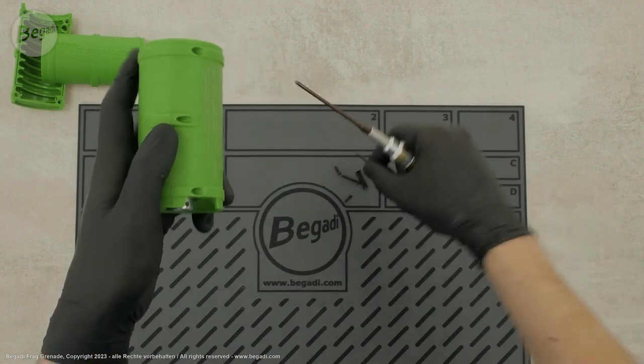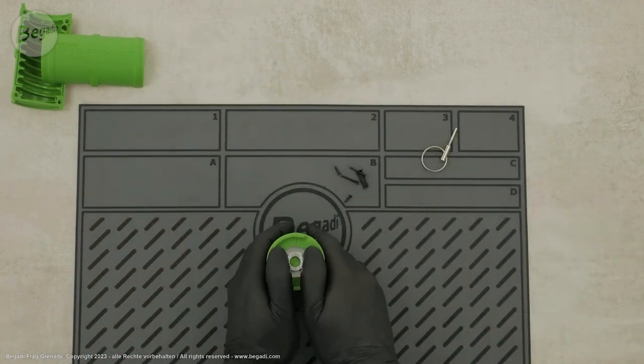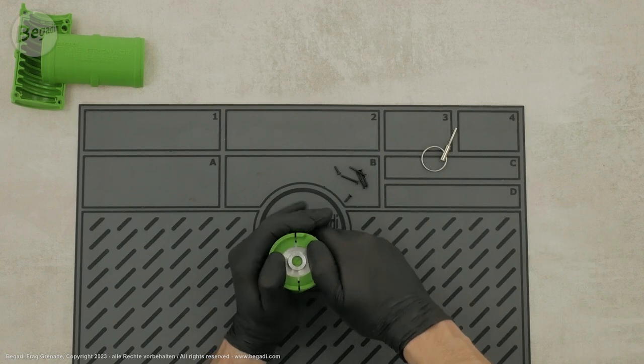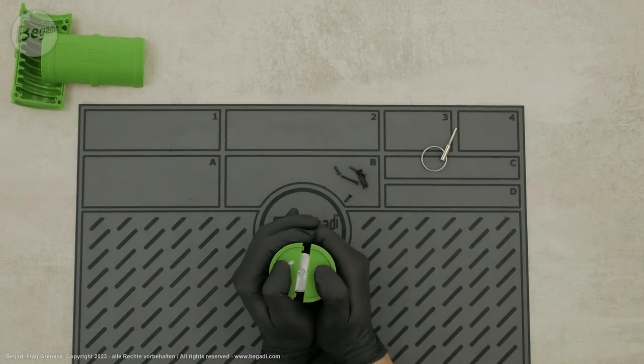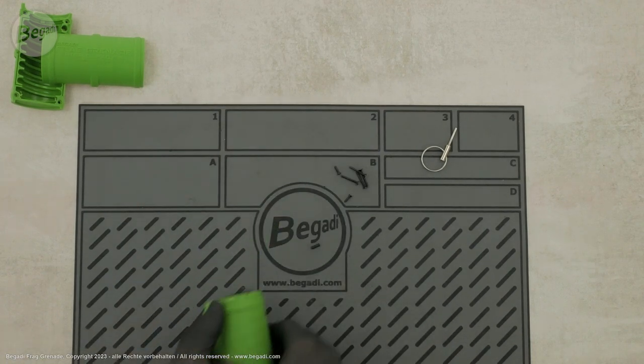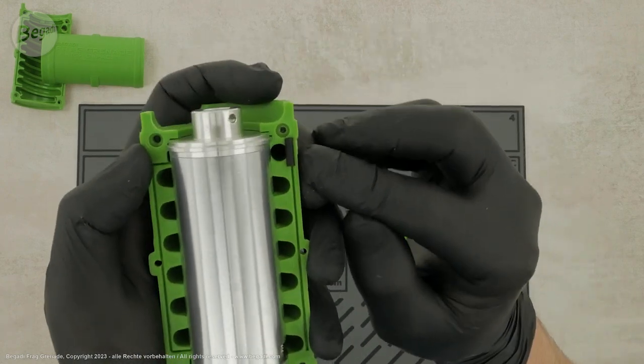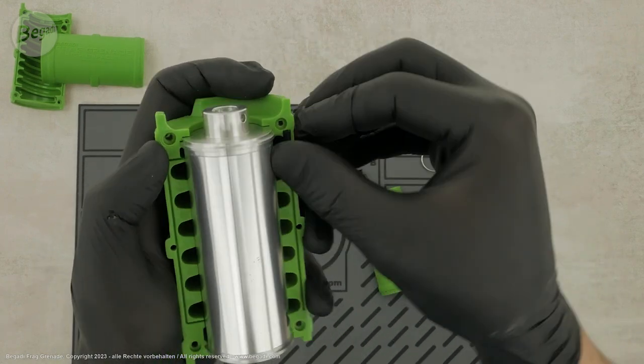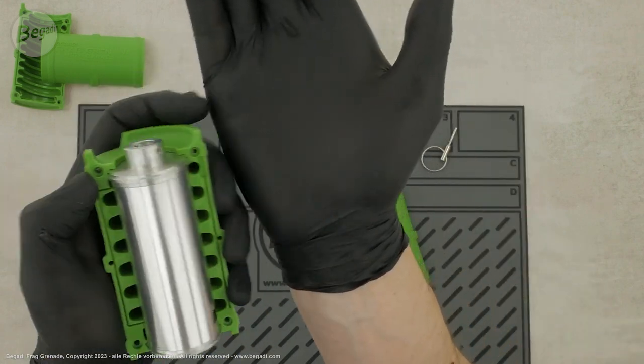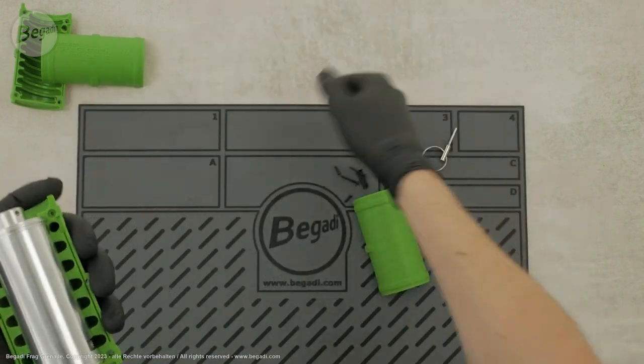After removing the screws, you can pull apart the two shell segments. This may require some force. If necessary, you can use a pointed object to help with the separation. However, be careful not to damage the plastic. Between the two shell segments, you'll find the rubber tensioner that holds the BBs inside. Be sure not to lose it.